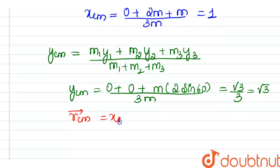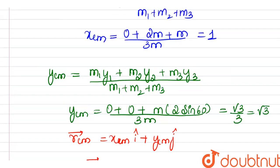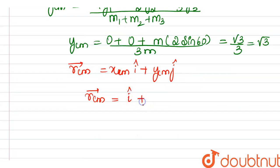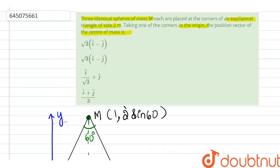Therefore the position vector of the center of mass is: x_cm is 1 so we have î, and y_cm is 1/√3 so we add (1/√3)ĵ. The center of mass position vector is î + (1/√3)ĵ, which corresponds to option number 3.